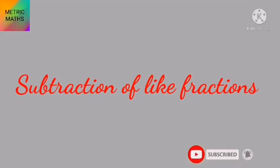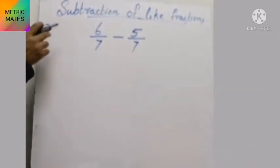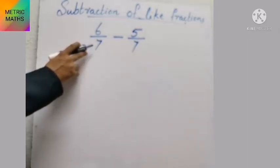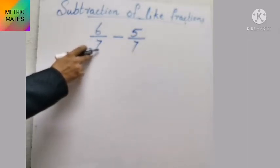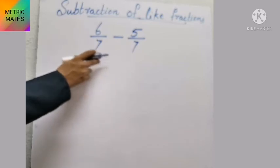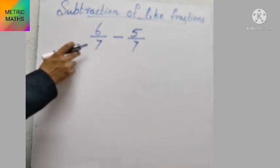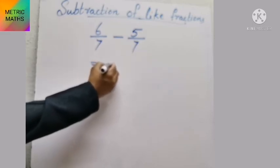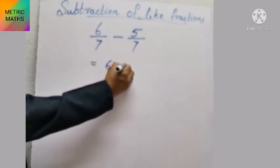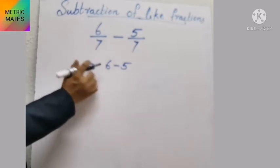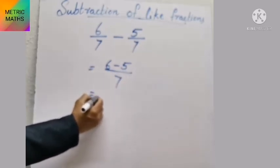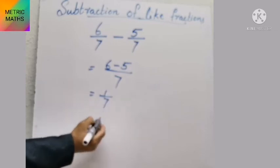Now let's look at subtraction of like fractions. For example, 6 by 7 minus 5 by 7 — the denominator is 7. We can easily subtract by just subtracting the numerators: 6 minus 5, divided by the same denominator 7, which equals 1 by 7.